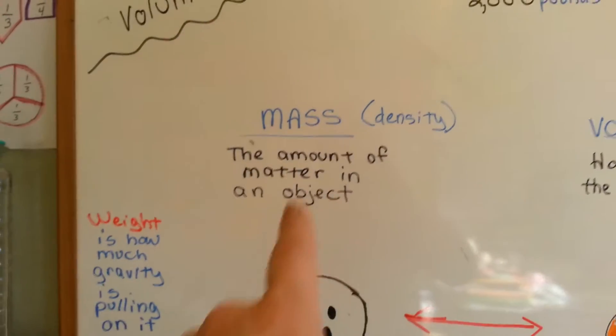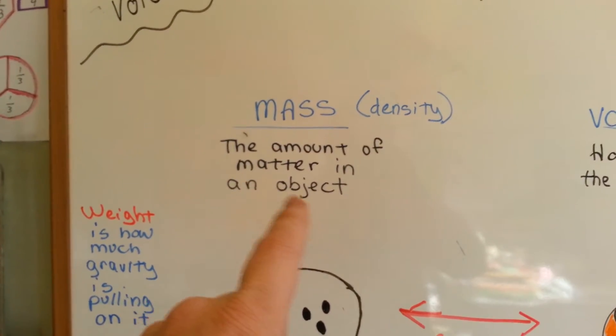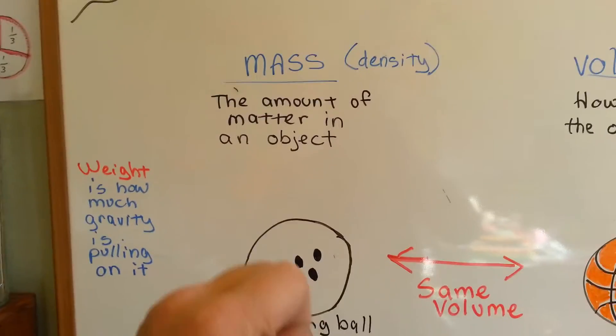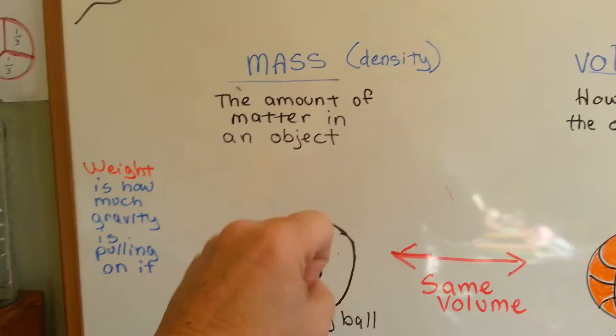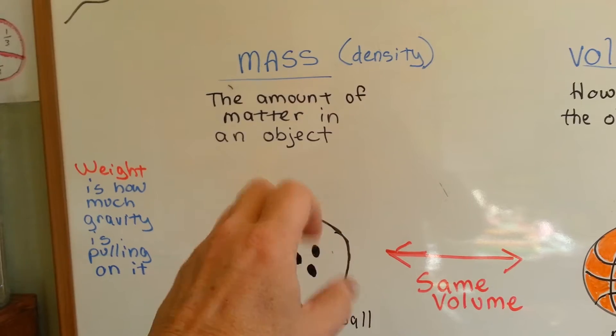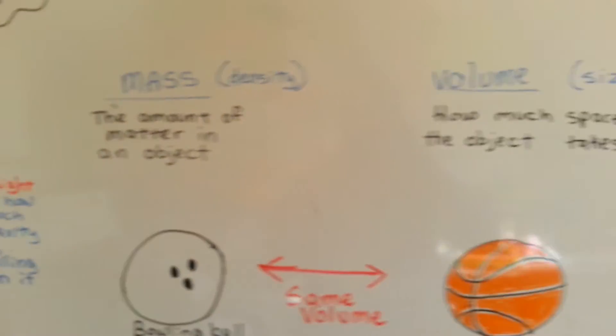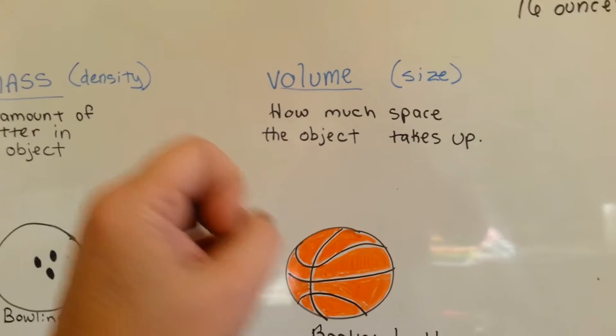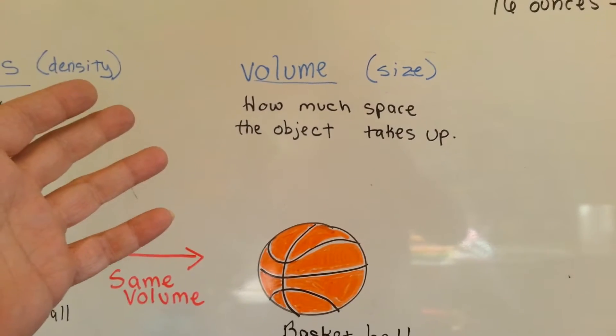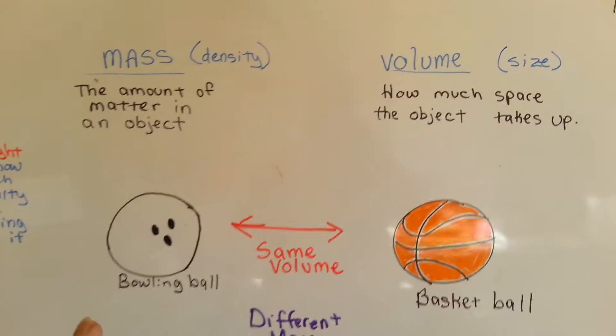Mass is the density of something. It's the amount of matter inside the object. It's how tight all the atoms and molecules are inside of that object, and the volume is the size and how much space that object takes up. So look at this.